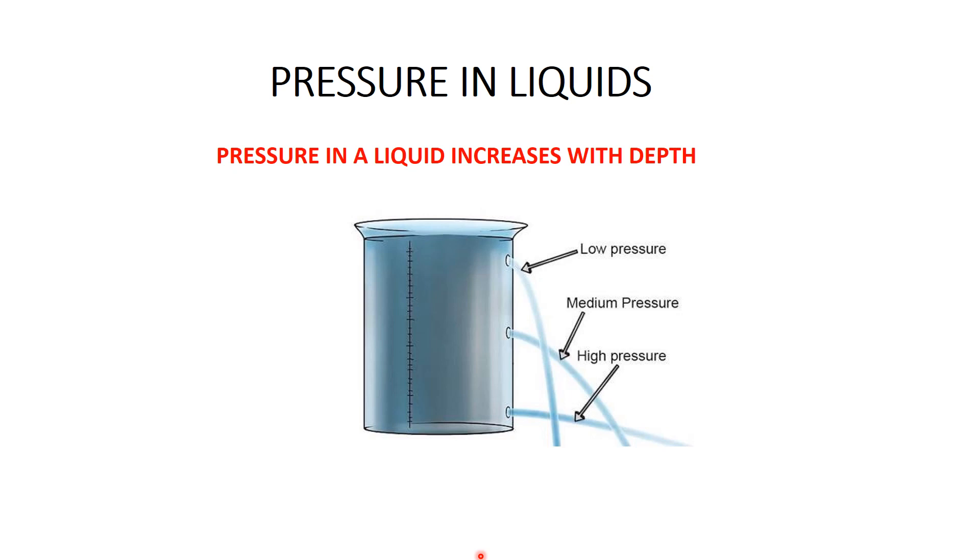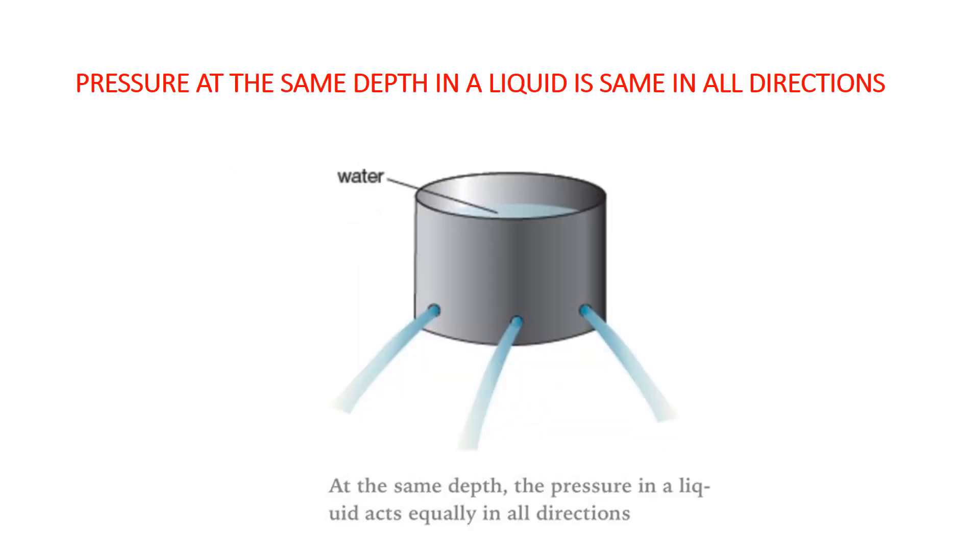What do you observe? You will observe that the pressure with which the water flows out increases according to the depth of the hole under the water surface. At the top surface, the water flows out with low pressure. As we come down, the water flows out with medium pressure, and at the depth, the water flows out with high pressure. This activity shows that pressure in liquid increases with depth.